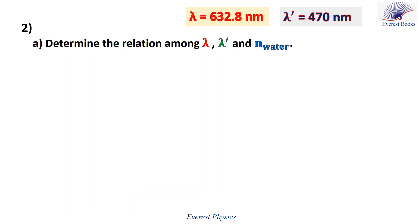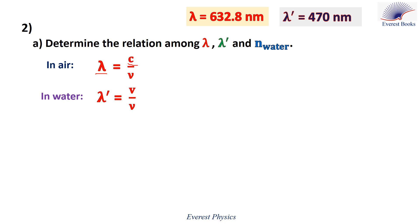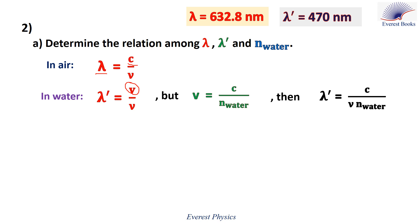Number 2a: determine the relation among lambda, lambda prime, and n_water. The wavelength of light in a medium equals its speed divided by its frequency. In air, lambda equals C over frequency N. In water, the wavelength becomes lambda prime and the speed becomes V, but the frequency remains N. Since V equals C over n_water, we get lambda prime equals C over (N times n_water), which gives lambda prime equals lambda over n_water.